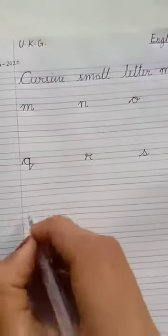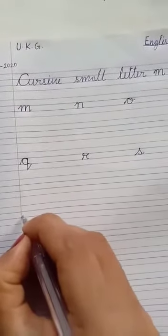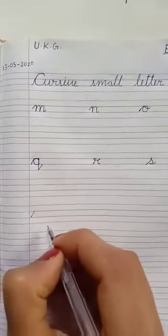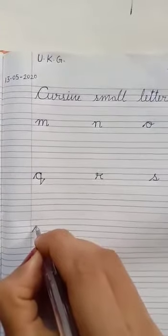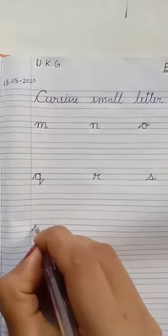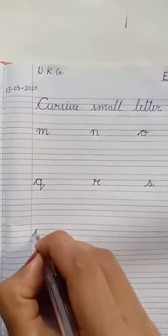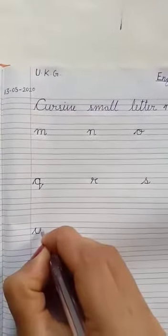U — start on the third line, go to the second line like this. We start on the second line, taking a turn on the third line, move back up and end on the second line.